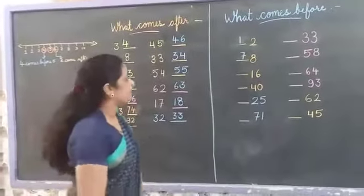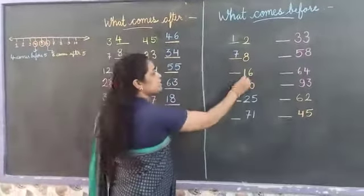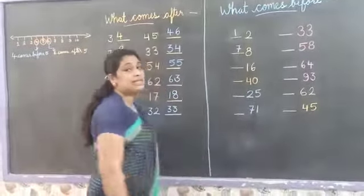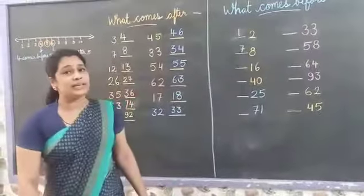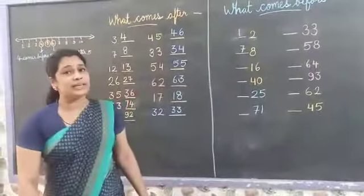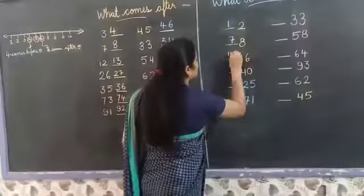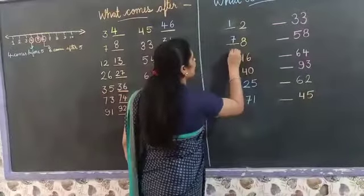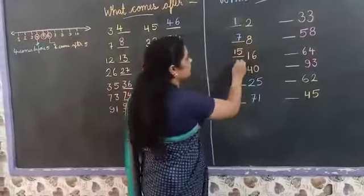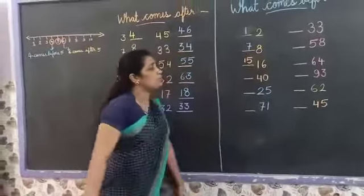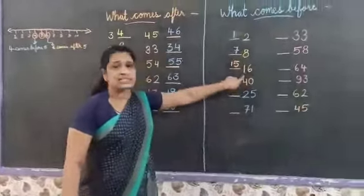Next number is 16. 16 ke pehle kya hota hai? 1, 5 — that is 15. 15 comes before 16.